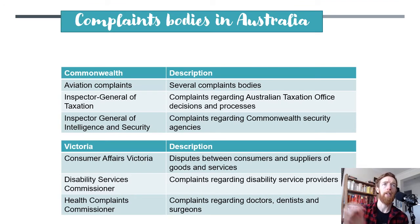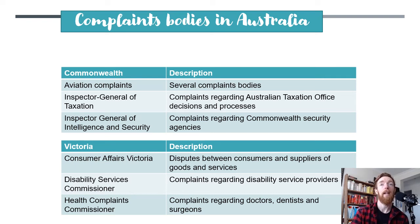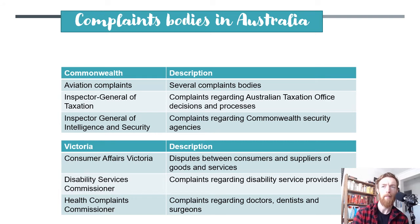Some other complaints bodies in Australia include: aviation complaints bodies for the aviation sector; the Inspector General of Taxation, who takes complaints regarding the ATO's decisions and processes; and the Inspector General of Intelligence and Security, who takes complaints regarding Commonwealth Security agencies — so if ASIO or similar agencies are doing anything untoward or illegal, they take those complaints.